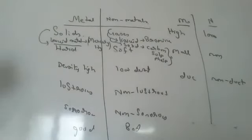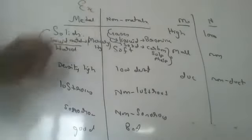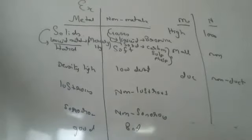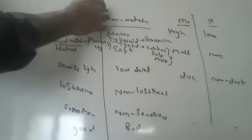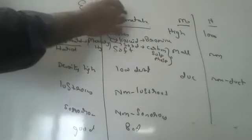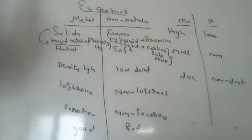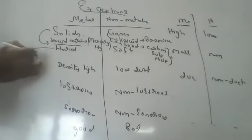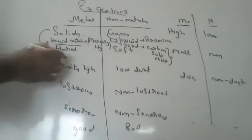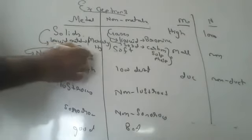Today we are discussing only exceptions. You should remember all these exceptions. Metals are generally hard solids, but there are some soft metals — sodium and potassium. If you take sodium and potassium, you can cut them with a knife like a cake.